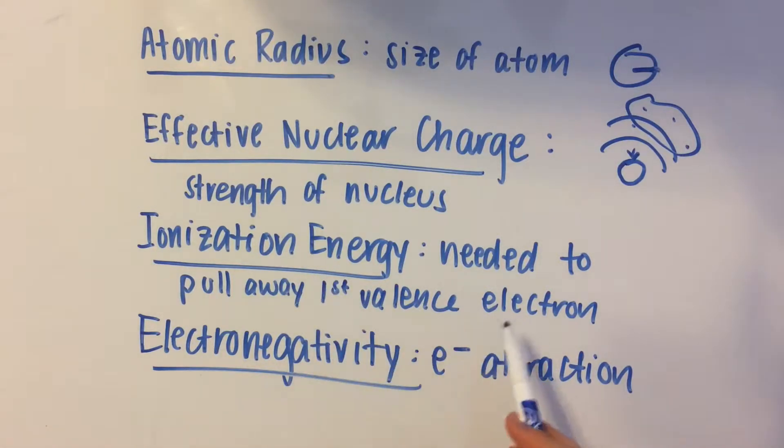And then ionization energy is the amount of energy that you need to pull away the first valence electron. If you're talking about second ionization energy, then that's the amount of energy that you need to pull away the second valence electron and so on and so forth.